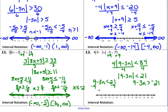Subtract 9 from both sides: negative 3n is less than 12. We're going to divide by negative 3, so we flip the inequality: n is greater than negative 4. We subtract 9 on the other one as well: negative 3n is greater than negative 30. Divide by negative 3, flip the inequality: n is less than 10.